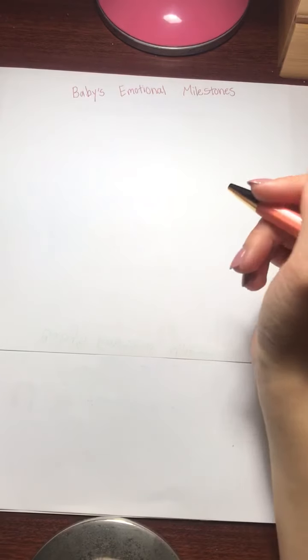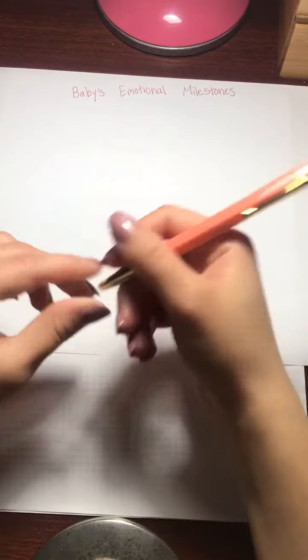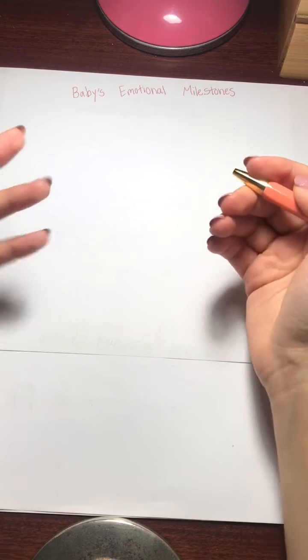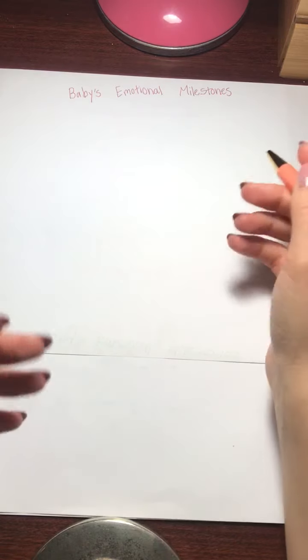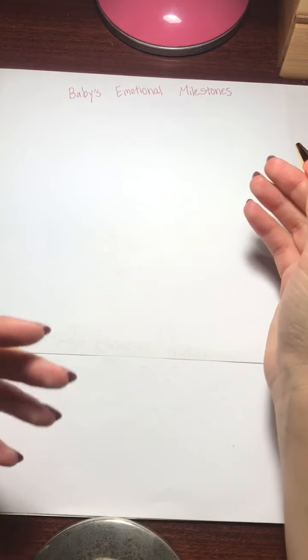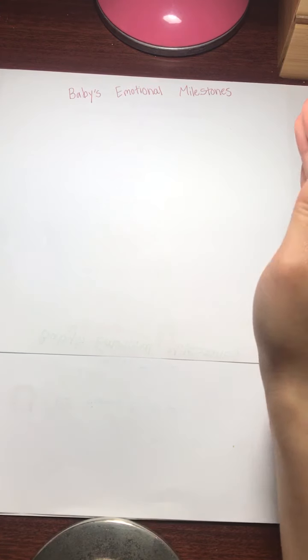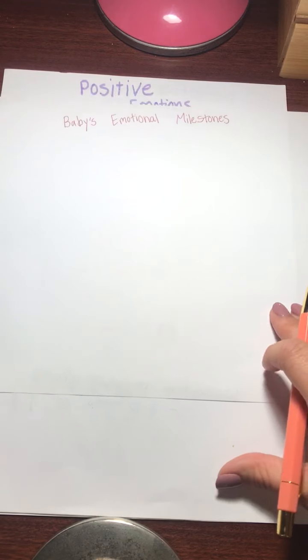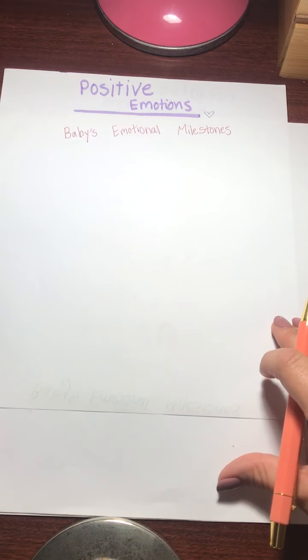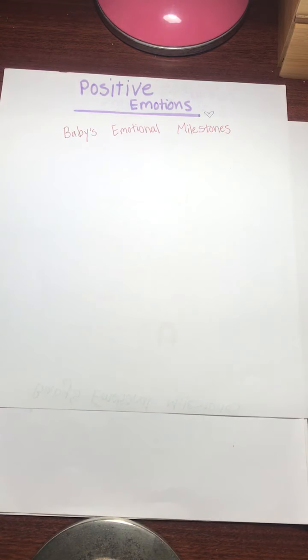Alright, hi. So I just wanted to give a quick rundown of baby's emotional milestones. I don't have any fancy equipment or anything here. We're just going to talk through it. I've written a few things down. I've done some really basic illustrations. Nothing fancy here. We're just going to go through them. We're going to be talking about baby's positive and negative emotions and when they should emerge.